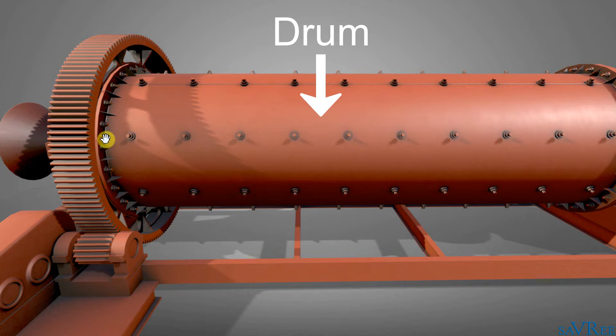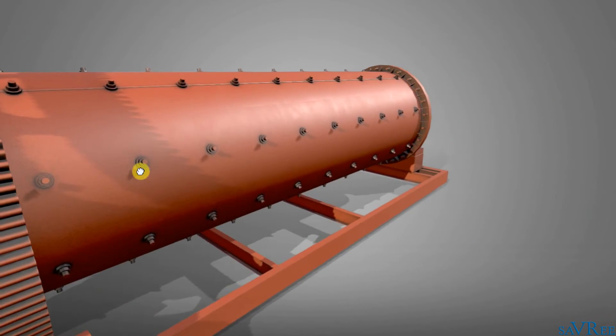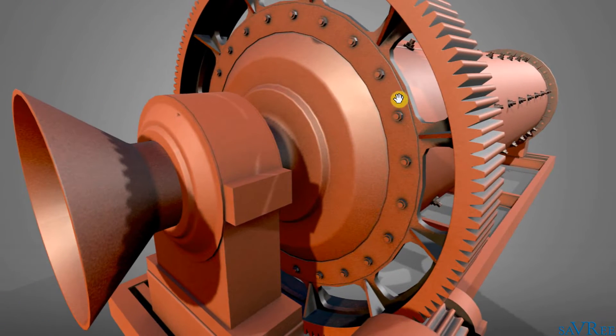The ball mill drum is measured by its length, that is from where my mouse is here all the way to the other end. And we'll also measure the ball mill drum by its diameter. You can see the diameter if we come over to this side. Diameter is roughly where this circle is here.